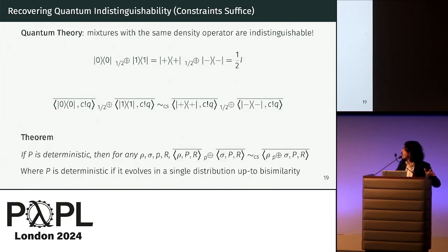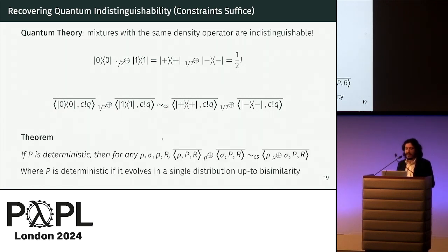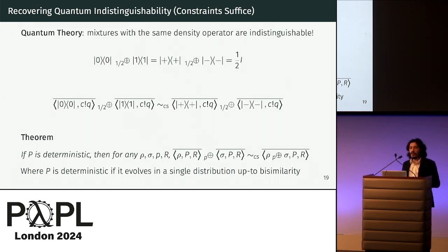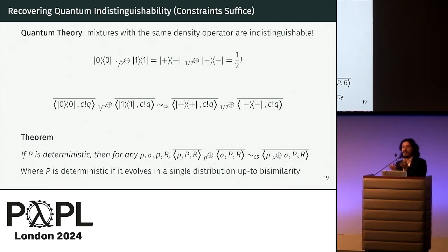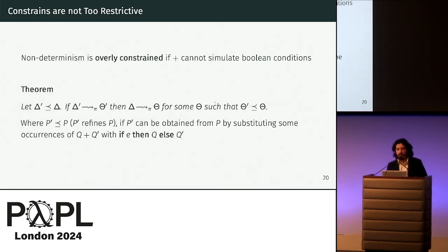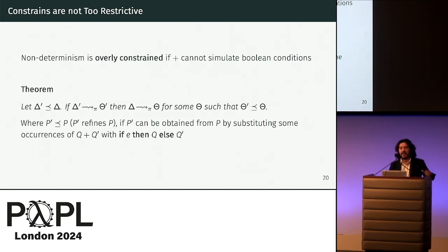This is confirmed by a characterizing theorem: if a process is deterministic — meaning it evolves into a single distribution up to bisimilarity — then if we have the process in a distribution with different quantum states, we can simply join them together with a convex combination of the quantum states. By applying this theorem twice, we recover exactly the indistinguishability result.